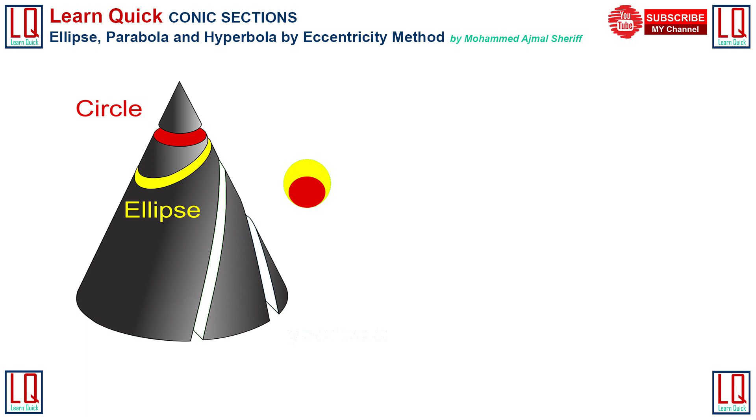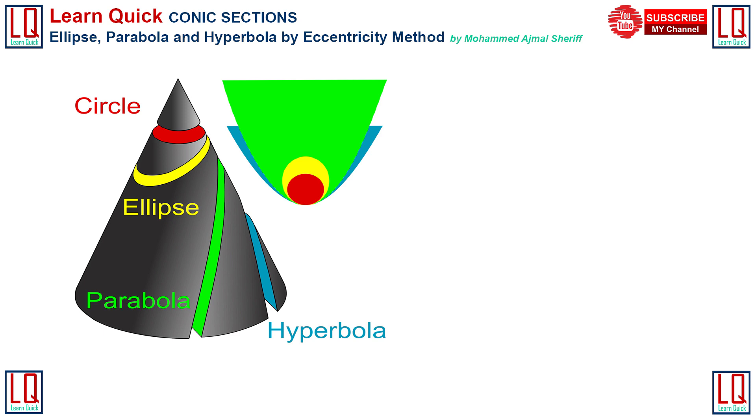When the cone is cut by a cutting plane inclined to its base at an angle smaller than the angle made by its generator with the base, the shape of the cut surface is an ellipse. When the angle made by the cutting plane is equal to the angle made by the generator with the base, the shape of the cut surface is a parabola. When the angle made by the cutting plane is greater than the angle made by its generator with the base, the shape of the cut surface is a hyperbola.